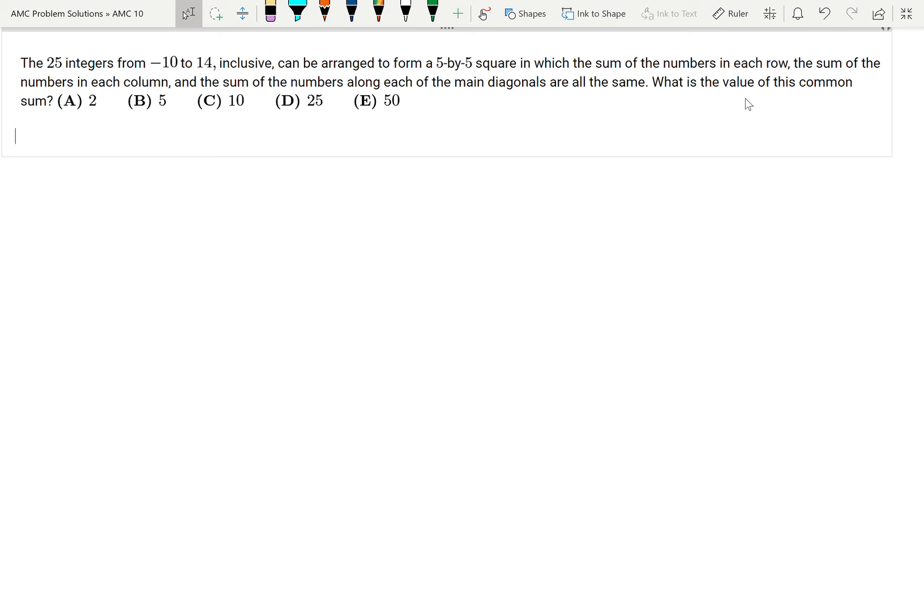The 25 integers from negative 10 to 14 inclusive can be arranged to form a 5 by 5 square in which the sum of the numbers in each row, the sum of the numbers in each column, and the sum of the numbers along each of the main diagonals are all the same. What is the value of this common sum? Okay, so first I'm going to draw this square.